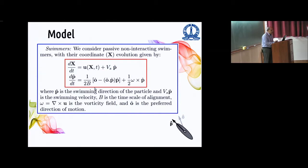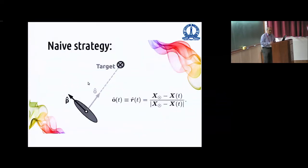So what are the parameters now in this model? There is v_s, the swimmer's speed, and b, which is a time scale of alignment. And we will non-dimensionalize this as we go along. So the naive strategy says, always take o hat to be in the direction of the target. And the direction of the target is given here. That is x of the target, that is x_t, minus current position of the swimmer.